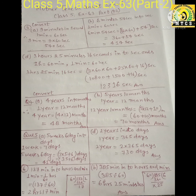Question B: 6 minutes 54 seconds into seconds. You have to convert 6 minutes into seconds, so 6 into 60, and 54 is already in seconds. So 6 minutes 54 seconds is equal to 6 into 60 plus 54 seconds.